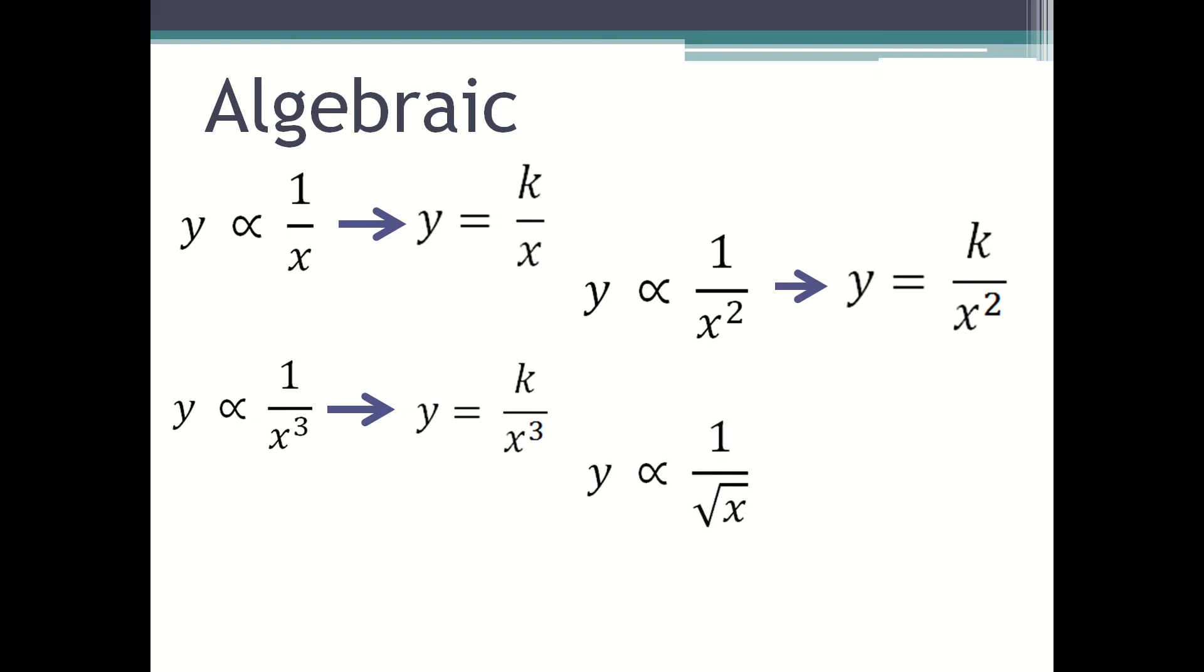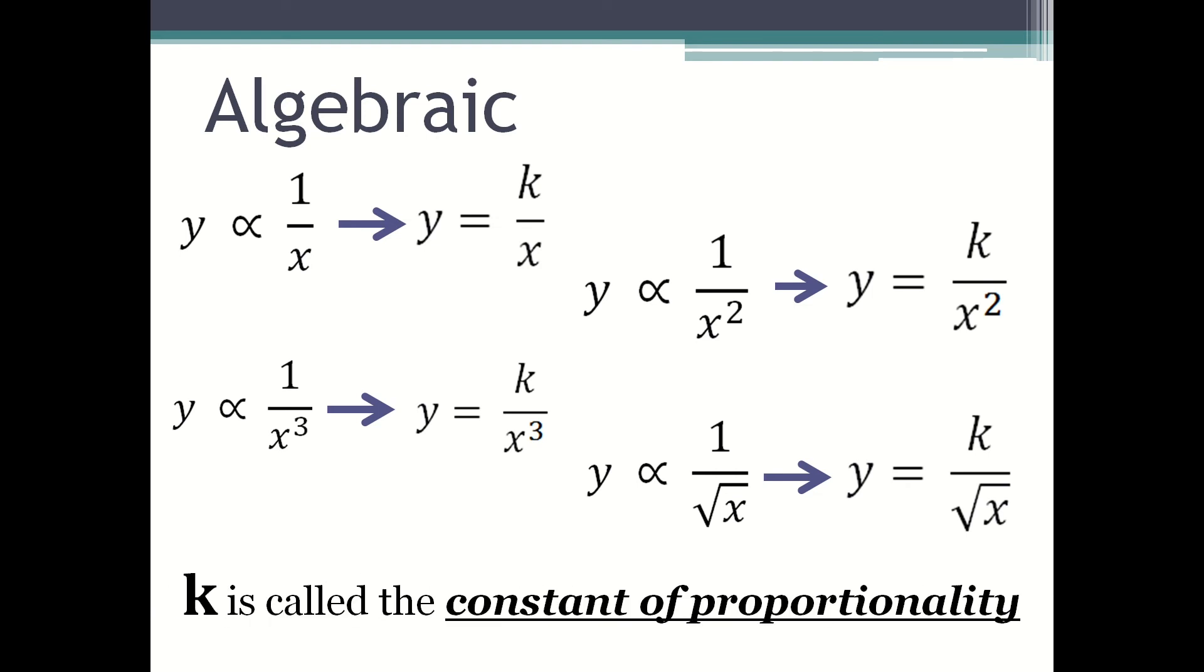And y is proportional to one over the square root of x can be written as y equals k over the square root of x. k is called the constant of proportionality.